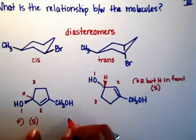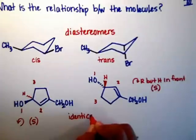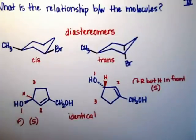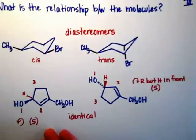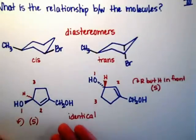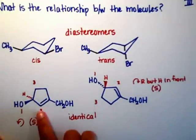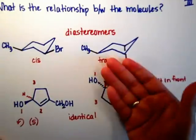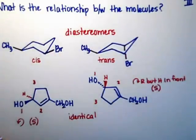The chiral center is exactly the same — both of them are S, so these two molecules are identical. If you take a spatula and you pretend that the molecule is like a pancake and you flip it like a pancake, you can actually flip this molecule to be the one on the right side.